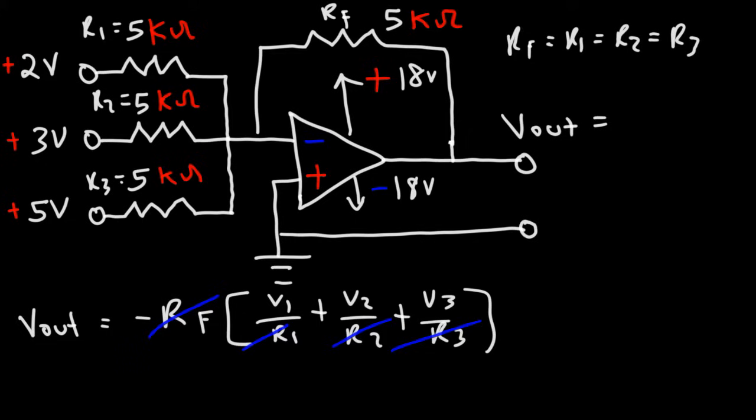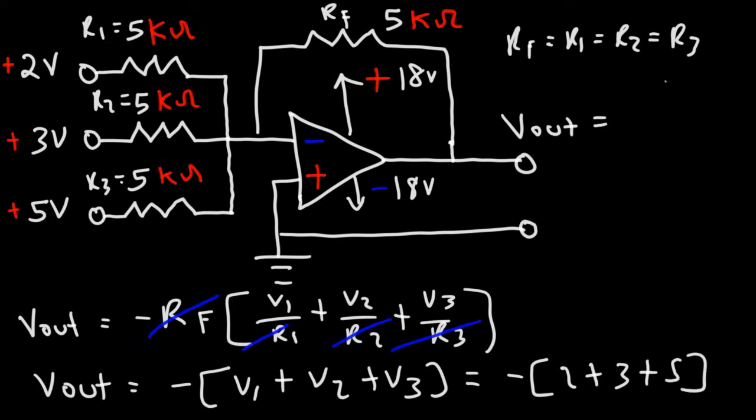So for a circuit, particularly a summing amplifier circuit, where all the resistors have the same value, the output voltage becomes the sum of all of the input voltages with a negative sign. So in this particular example, it's going to be negative 2 plus 3 plus 5. So the output voltage is going to be negative 10 volts. So this is the answer for this problem.